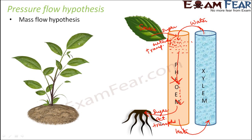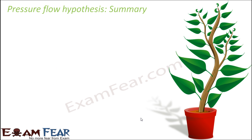This phenomenon keeps repeating, and this is how sugar is transported from the source to the sink. The sink can be multiple — it can be a root, a flower, a fruit, a branch, an apical meristem, or a lateral meristem, because all of them need food. This is how the pressure flow hypothesis operates and how phloem transports food to different parts of the plant.